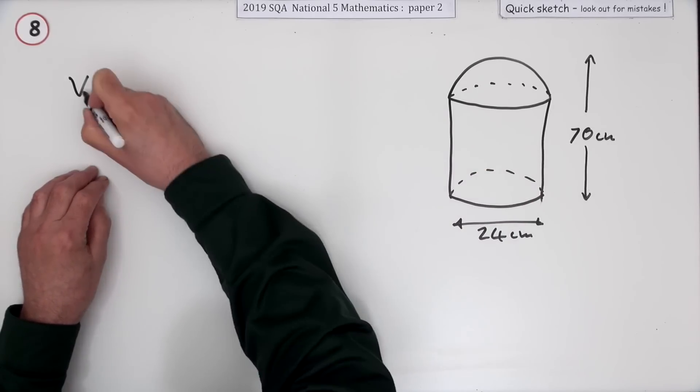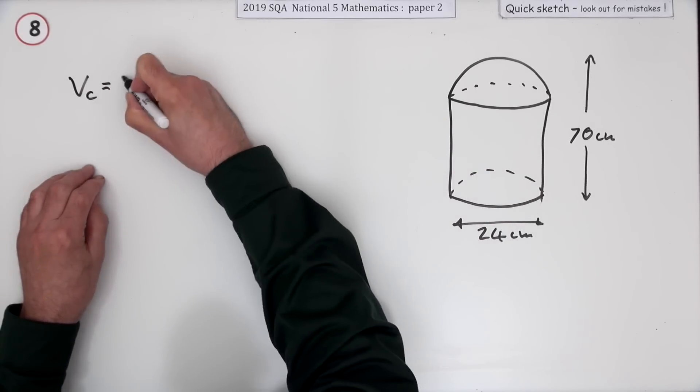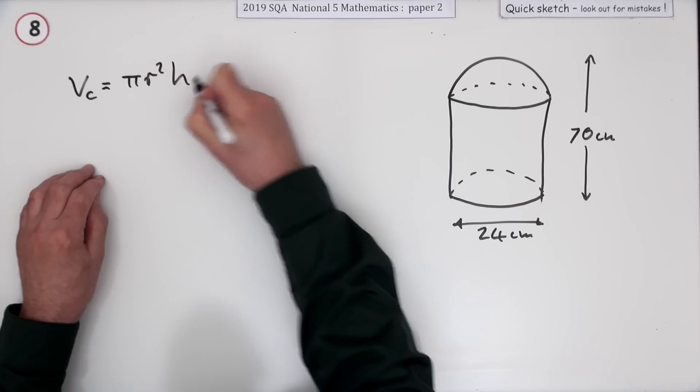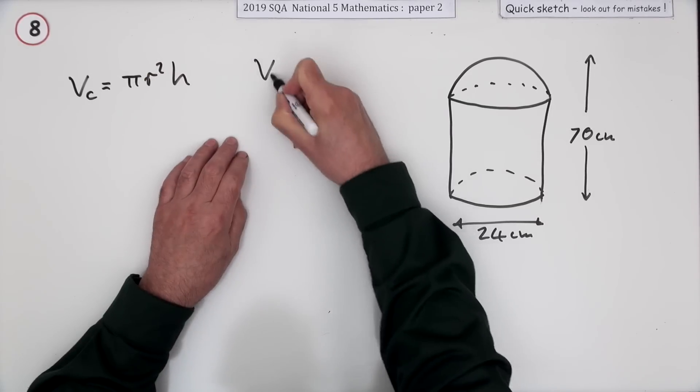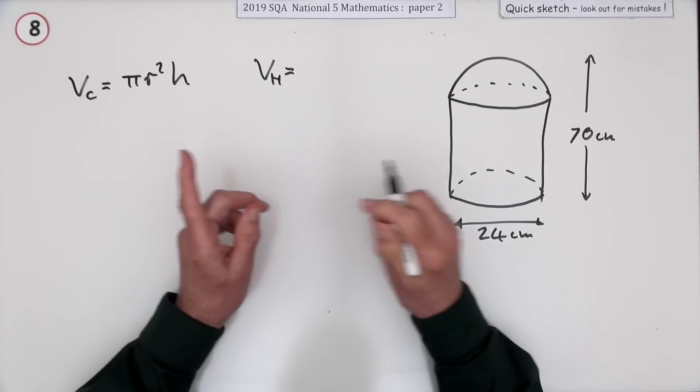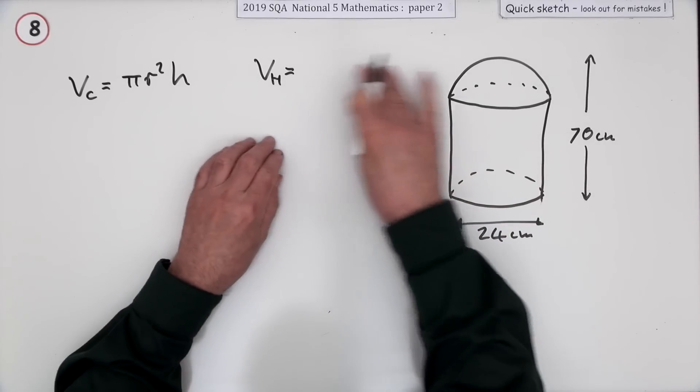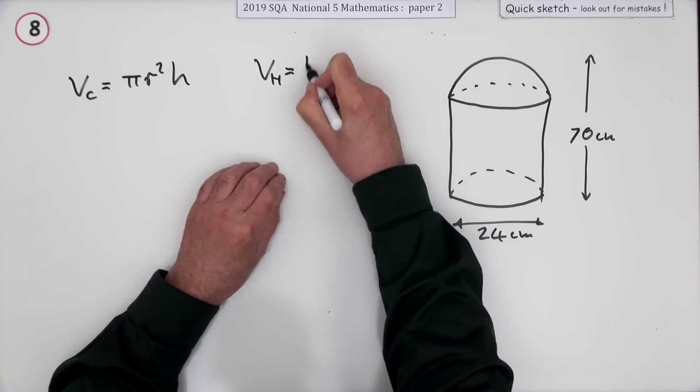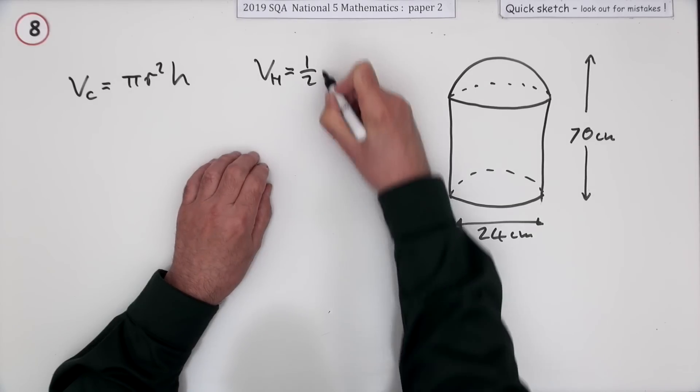There's two parts to it. There's the volume of the cylinder, and you can look up the front, pi r squared h. And there's the volume of the hemisphere. At the front, it'll give you the volume of a sphere. You could do that and then half it, or you could just go straight in by saying it's half of a sphere, half of four upon three pi r cubed.